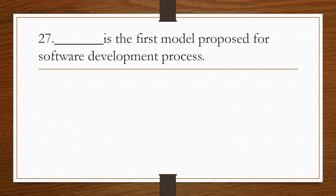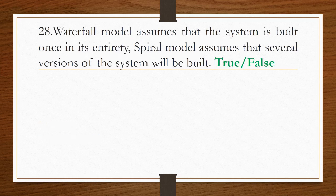Blank is the first model proposed for software development process. Answer is waterfall model. Waterfall model assumes that the system is built once in its entirety. Spiral model assumes that several versions of the system will be built. True or false? The above statement is true.